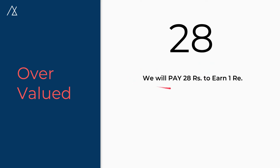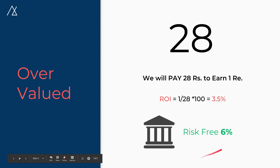Now let's look at the current overvaluation situation using the same logic. At PE 28, we are ready to pay 28 times to gain 1 rupee of income. So ROI equals 1 divided by 28, multiplied by 100, which equals a mere 3.5%. The stock market return today is 3.5%, compared to a risk-free return of 6%. So ask yourself: what would you do? Yes — withdraw your investment from markets and invest it in debt or government bonds.